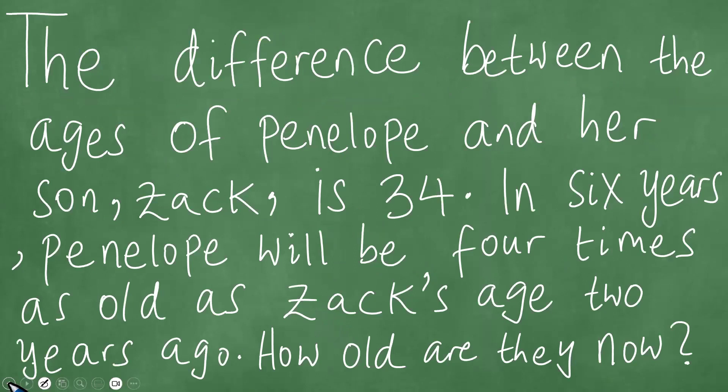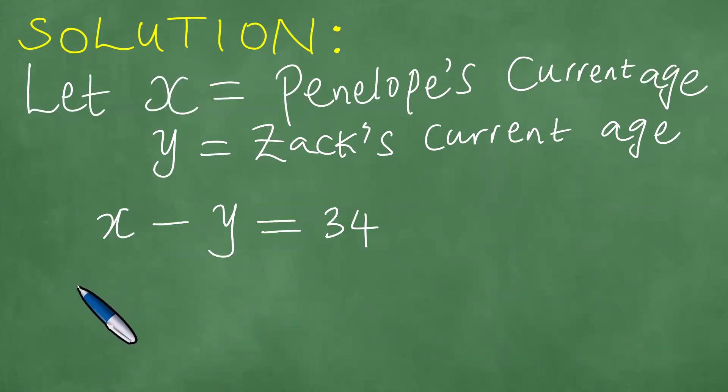Next, because they say the difference between the ages of Penelope and her son Zack is 34, in six years Penelope will be four times as old as Zack's age two years ago. So we take Penelope's age and add six years, and this will be four times Zack's age two years ago. So this is minus two.